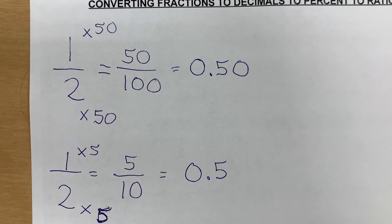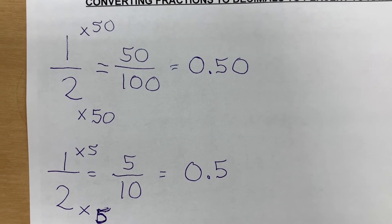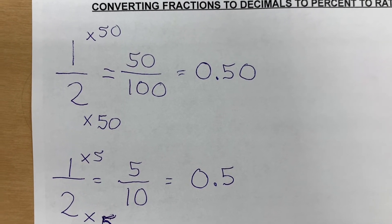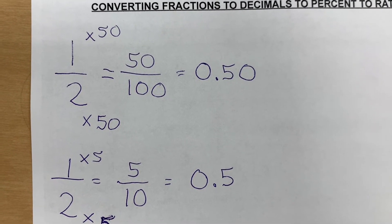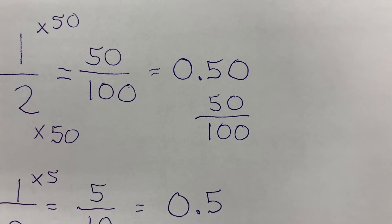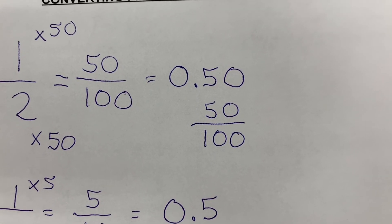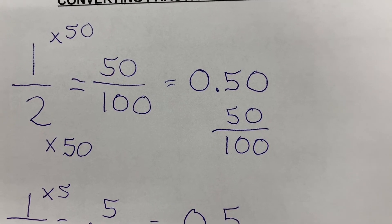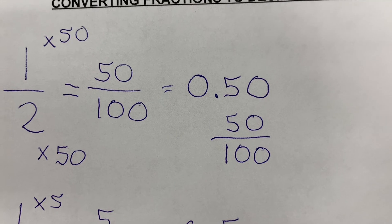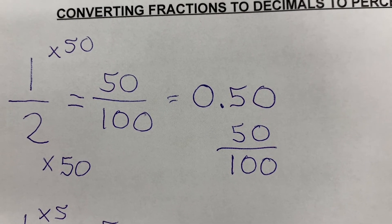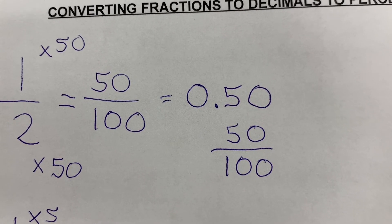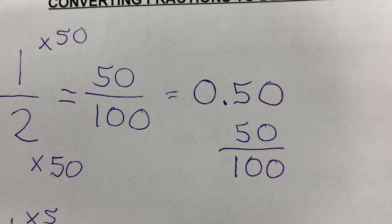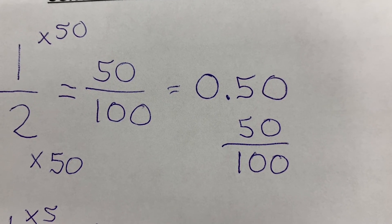We put the decimal because anything to the right of the decimal will be part of a fraction. Because the 5 is in the tenths place and there's nothing in the hundredths place, that means we have 50 hundredths.